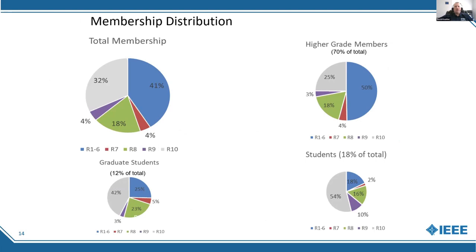To show our membership distribution — total membership shown in blue — Regions 1 through 6 are the regions residing within the United States. Region R10 is Asia Pacific. Region 8 is Europe, Middle East, and Africa. Region 7 is Canada, and Region 9 is Latin America.